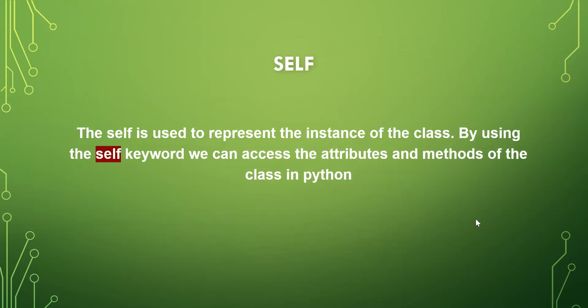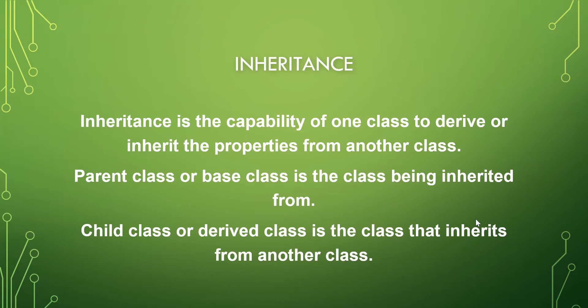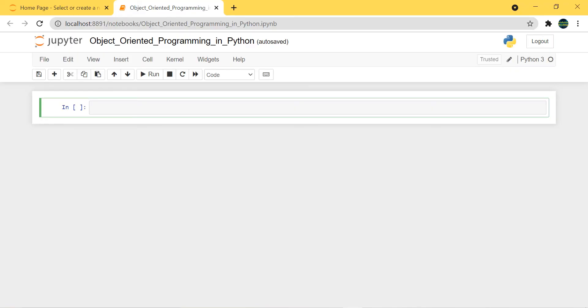Self is used to represent the instance of the class. By using the self keyword we can access the attributes and methods of the class in Python. Inheritance is the capability of one class to derive or inherit the properties from another class. The parent class, or base class, is the class being inherited from. The child class, or derived class, is the class that inherits from another class. To understand more about classes and object oriented programming in Python, we are going to define some classes and objects.